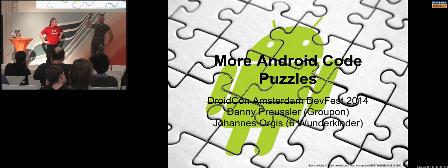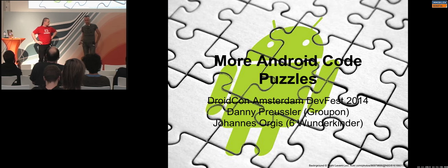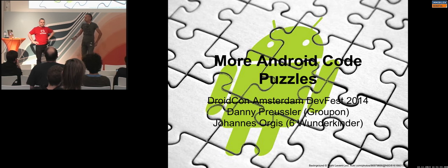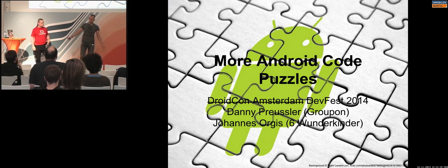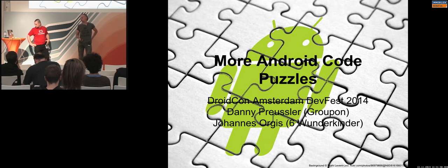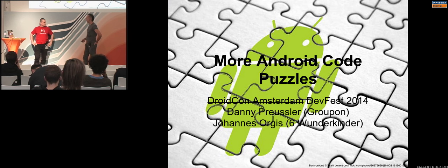This talk is called 'More Android Code Puzzles' because two years ago at DroidCon Amsterdam we did the first part of it. It was very easy to show Android pitfalls back then because fragments were new and you had all these Android 2 devices flying around, so it took some time to find new puzzles.